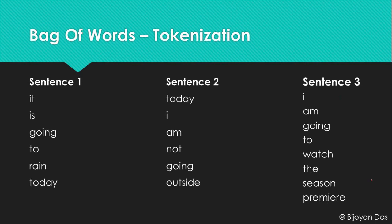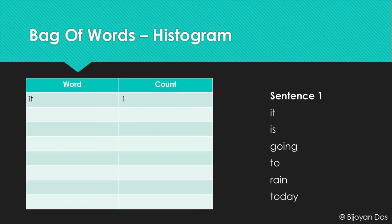Now we have to form a histogram out of all of these tokenized sentences. So we are going to pick one word — say we pick the word 'it' — and then find out how many times it appears in all of these sentences. It appears once and nowhere else, so it will have a value of one. Similarly we look at 'is', then 'going', and so on, building a dictionary where each word is a key.